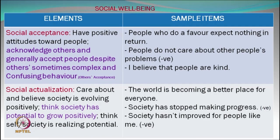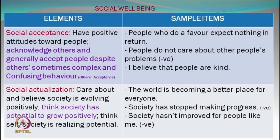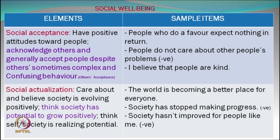Next, questions related to social well-being. First factor is social acceptance: have positive attitudes toward others and generally accept people despite their sometimes complex and confusing behaviors. Questions: 'People who do a favor expect nothing in return' — positive trait. 'People do not care about other people's problems' — negative question. 'I believe that people are kind' — positive question. High score on first and third plus low score on the middle one means high level of social acceptance.